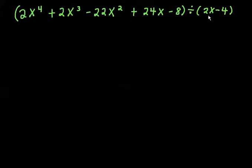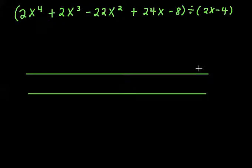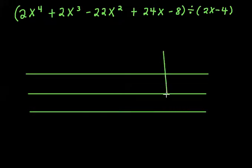So the very first thing I want to do is start my area model, and I'm going to draw two rows, and that's going to give me lines or rows for my divisor. This is the divisor, 2x minus 4. I'll need two rows for that. And I'm going to go ahead and list the terms of that divisor right here, 2x right here, and minus 4.